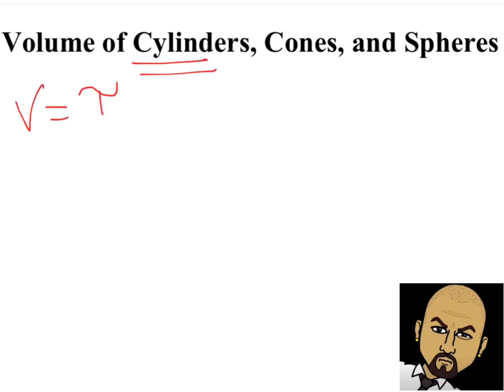The formula for the volume of a cylinder is going to be pi times the radius squared times the height. Remember, it's basically the area of a circle, which is the base, times the height. And that's why it's derived as pi r squared times the height.